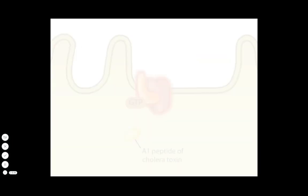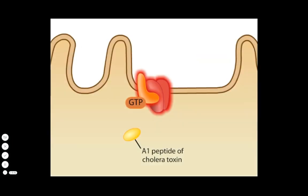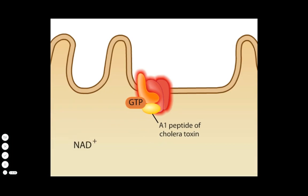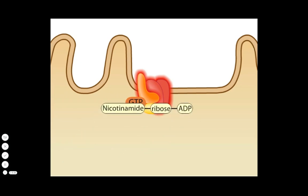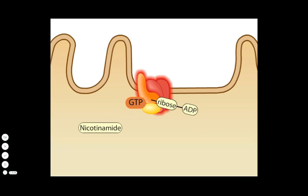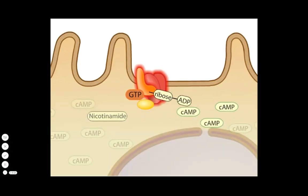The A1 peptide of cholera toxin is an enzyme that uses a molecule of NAD+, which is made up of a nicotinamide group, a ribose sugar, and an ADP molecule, and adds the ADP ribose to the G protein alpha subunit. This is an ADP ribosylation reaction, and it prevents the G protein from cleaving GTP into GDP and inorganic phosphate. Adenylate cyclase remains activated for a long period, increasing the levels of cyclic AMP tremendously.